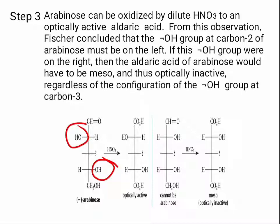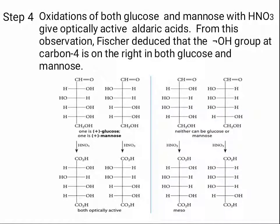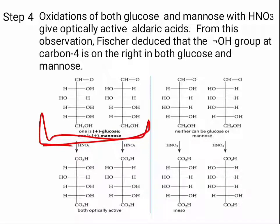Step 4: oxidation of both glucose and mannose with HNO3 gives optically active aldaric acids. Fischer deduced that the OH group at carbon 4 is on the right in both glucose and mannose. After oxidizing both glucose and mannose — without initially knowing which structure was which — he found that both products are optically active.